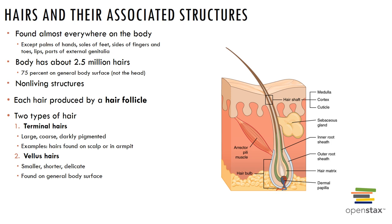The arrector pili muscle is a smooth muscle attached to the hair follicle and is responsible for goose bumps. Hair growth occurs in phases followed by a regressive and resting phase; the growth phase varies depending on the part of the body. True baldness is genetically determined and can be a sex-influenced condition. Alopecia is hair thinning seen in both sexes after the age of 40.